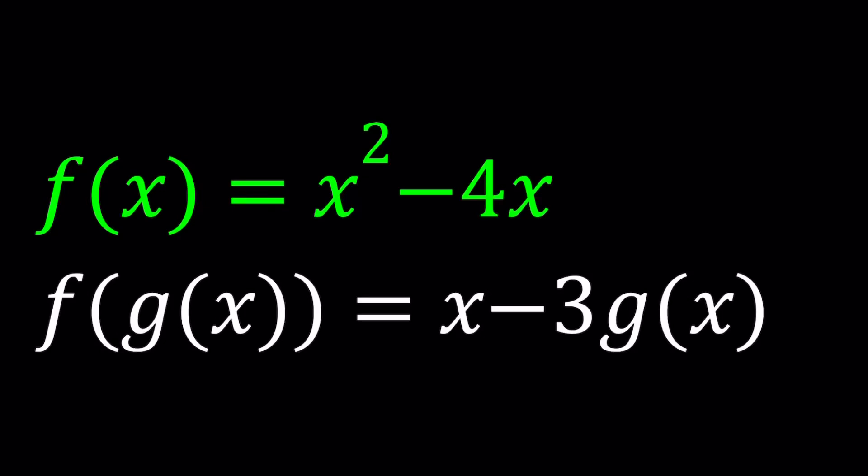Hello everyone, in this video we're going to be working with functions. We have f of x equals x squared minus 4x, and f of g of x, which is the composition of f with g, equals x minus 3 times g of x.